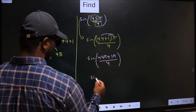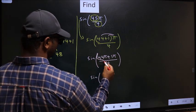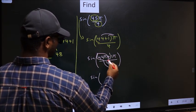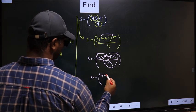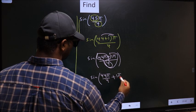Sin. Now, you should split the denominator in this way. That is 44π/4 plus 1π/4.